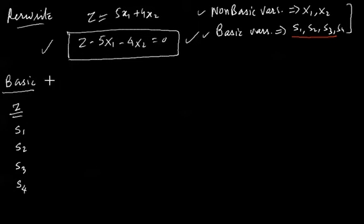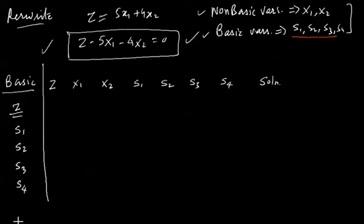So basic, you will write z over here, and then you will write s1, s2, s3, s4. Then you will write z over here, x1, all the variables in the objective function will come here, x2, s2, s3, and s4, and at the end you will have to write solution. Now we'll make the lines. These are your lines which give it the look of a table.